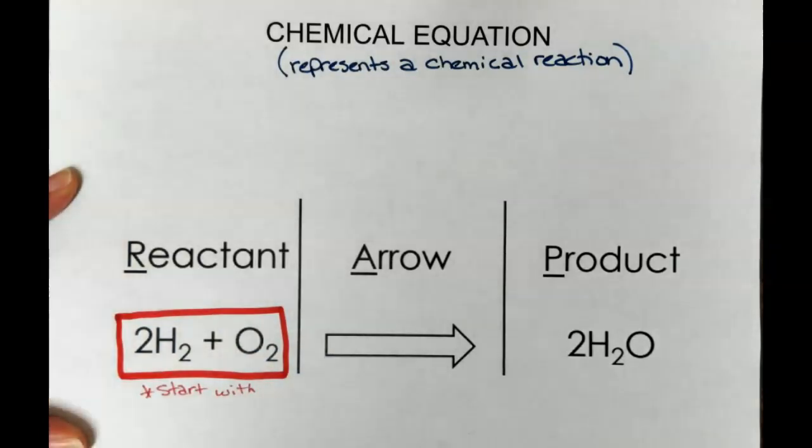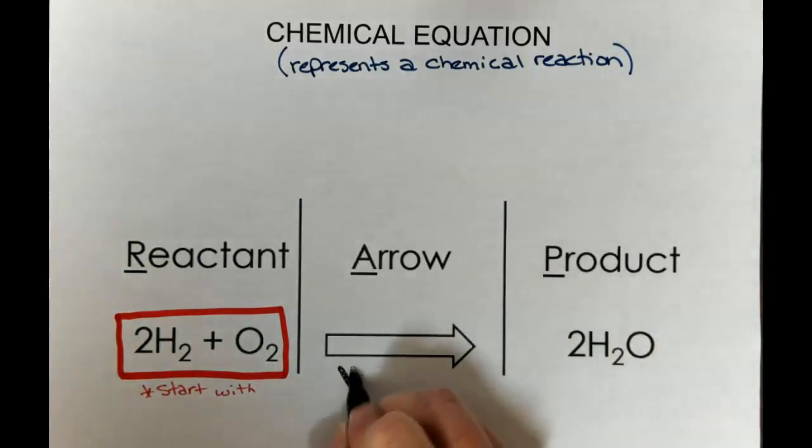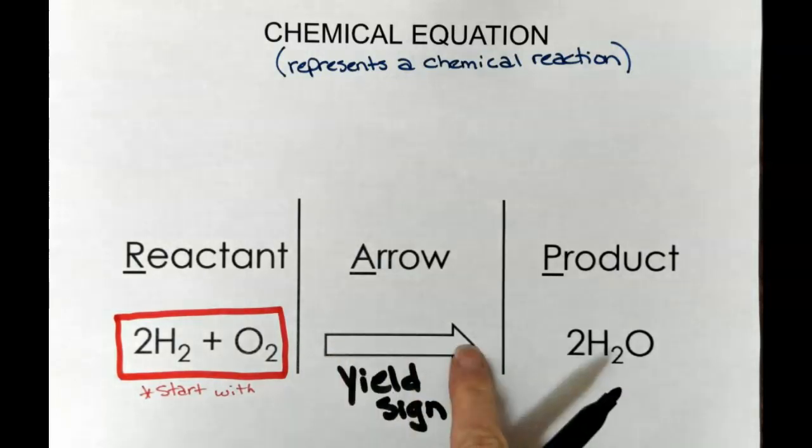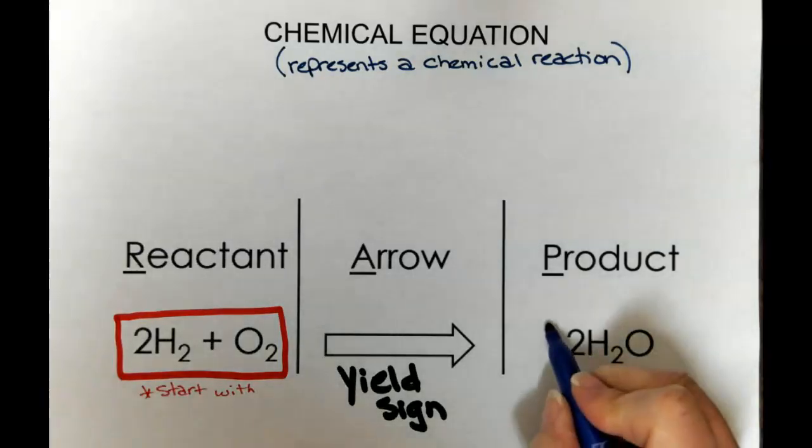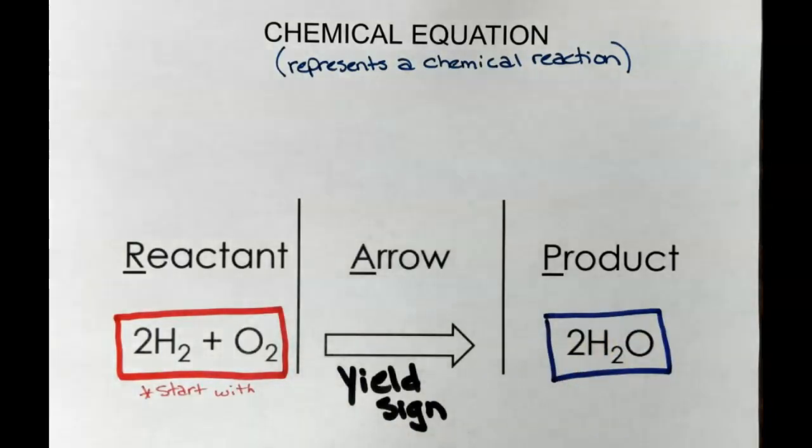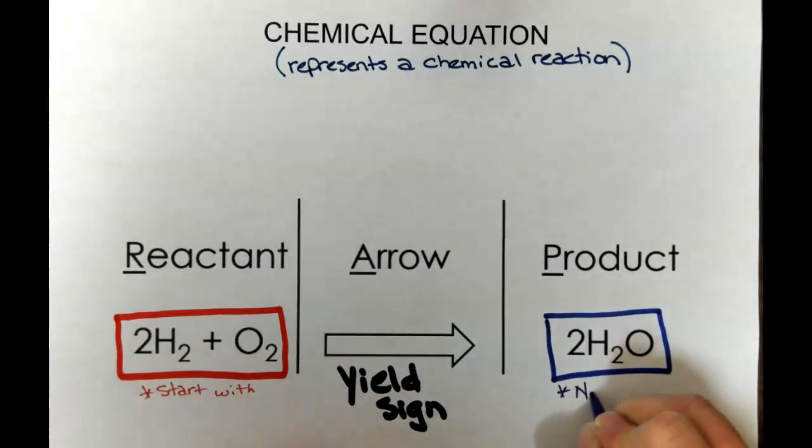The arrow is called the yield sign. So we yield or produce a new substance. The yield sign shows the direction that the reaction is taking place. Anything to the right of the arrow is what we call the product. The product is the new substance that is produced, and that's the key. This is a new substance that is produced. So this is the result of the reaction.